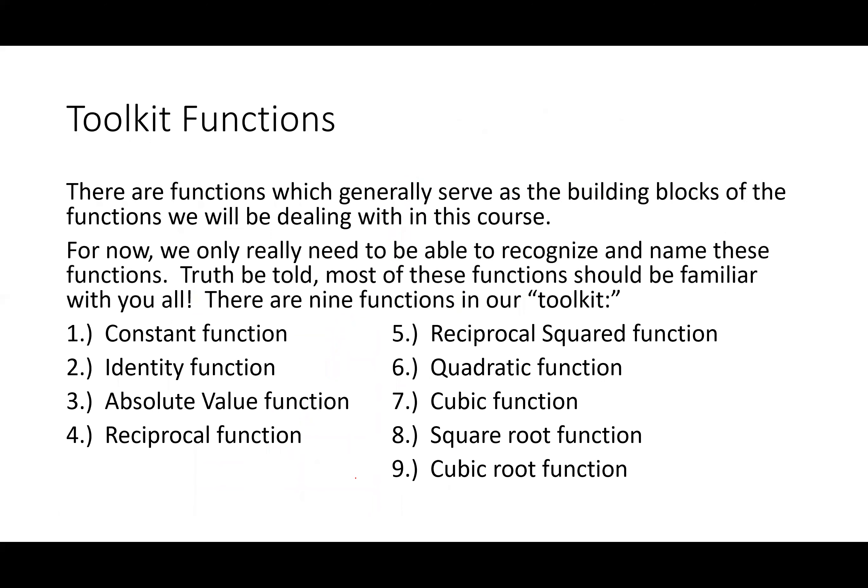Now we've talked about one-to-oneness and whether something is a function using equations, graphs, and tables. What we have now are the toolkit functions — nine of them that we'll be utilizing in the course. We're going to spend time going through particular toolkit functions with rigor: solving equations, simplifying expressions. Some we only need for transformational purposes in section 1.5. For right now, I'd love for you to have a note-card memorization of these: when you see a graph, tell me its name and equation; when you see the equation, tell me what the graph looks like.